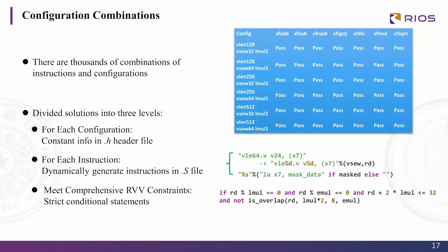For the configuration combinations, there are thousands of combinations of instructions and configurations — the table shown is just a small part. We handle this problem on three levels. For each configuration, we write common info in a header file that each instruction can use. For each instruction, we dynamically generate assembly instructions for different parameters instead of hard-coding them. In RVV, many cases are reserved, so for complicated constraints we write comprehensive conditional statements — like long if-statement chains — to meet requirements and ensure every instruction generated is legal.